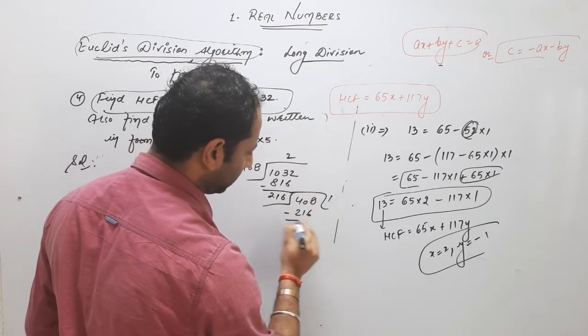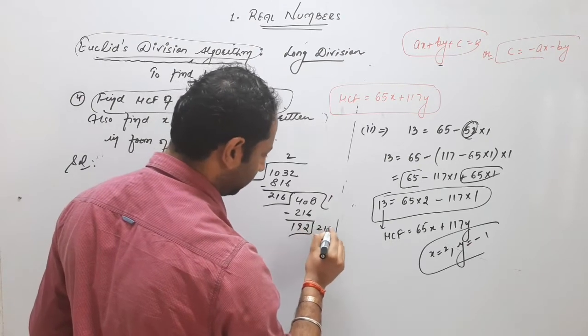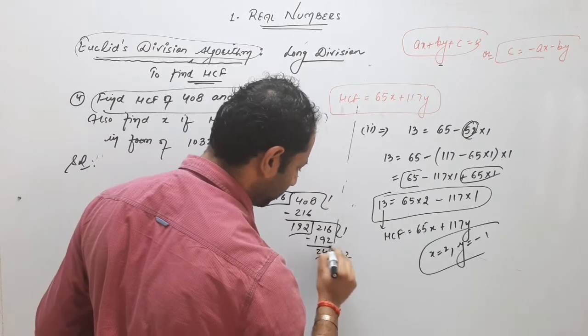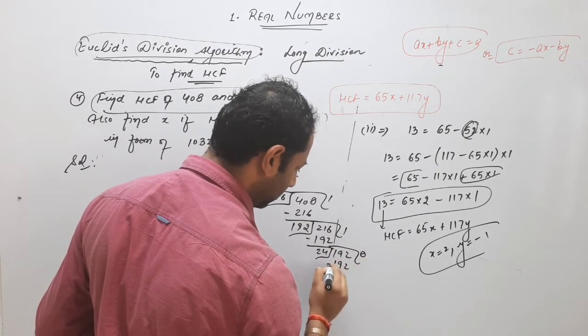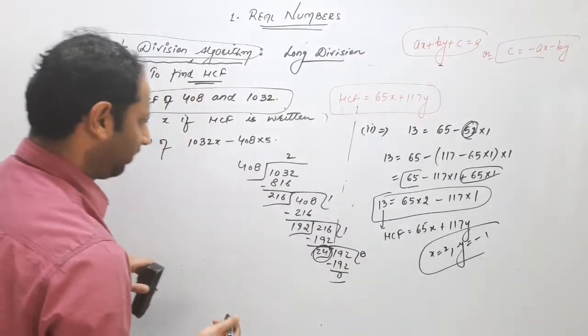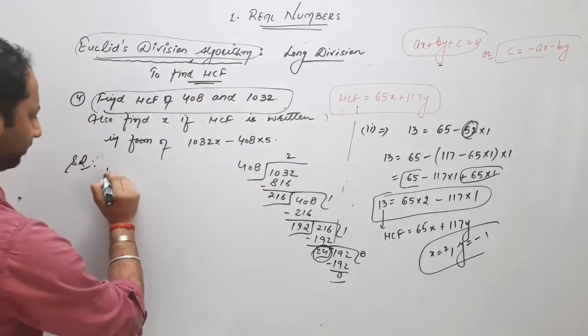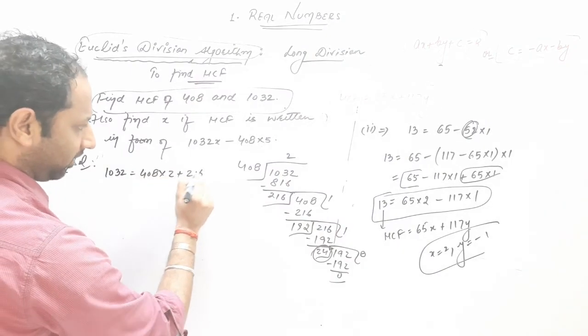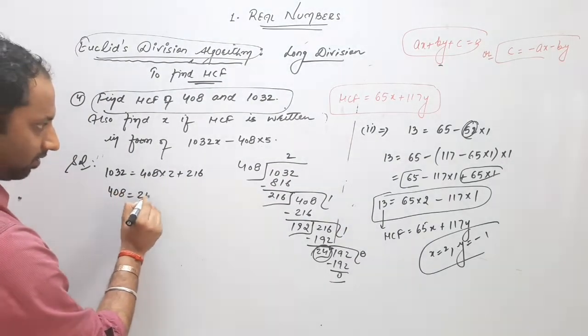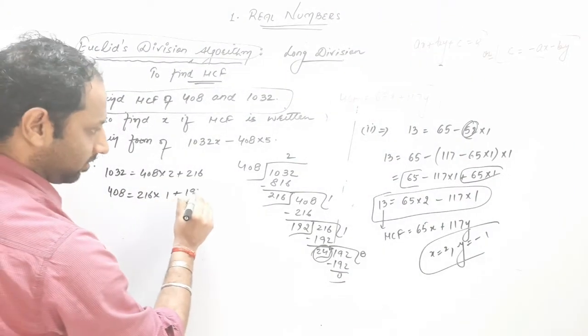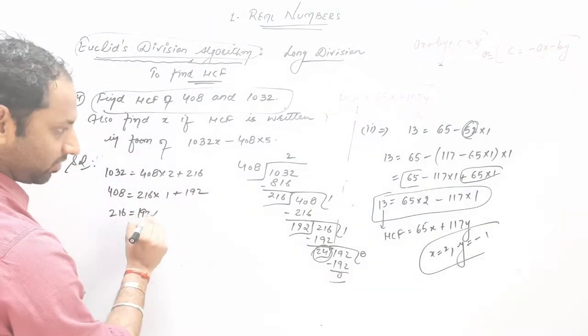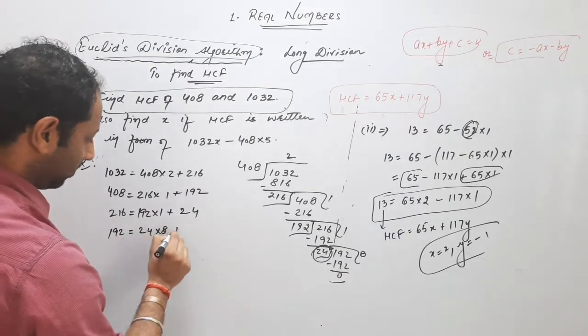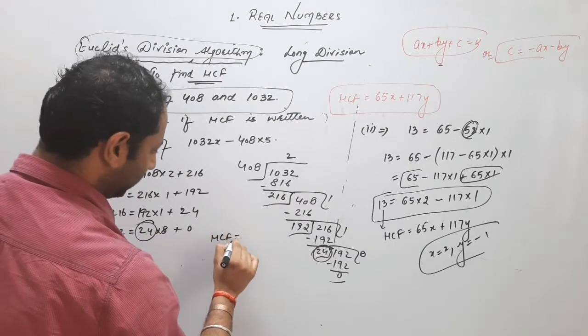HCF this is there, now 216, 24, 8, so clear HCF is 24. We can write dividend, divisor, quotient, remainder, second dividend, divisor, quotient, remainder, dividend, quotient, divisor, remainder, dividend, divisor, quotient, clear HCF is 24.